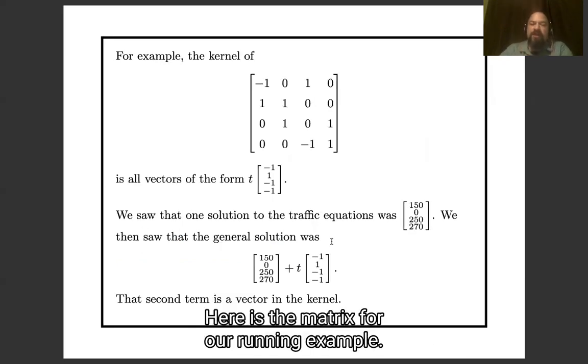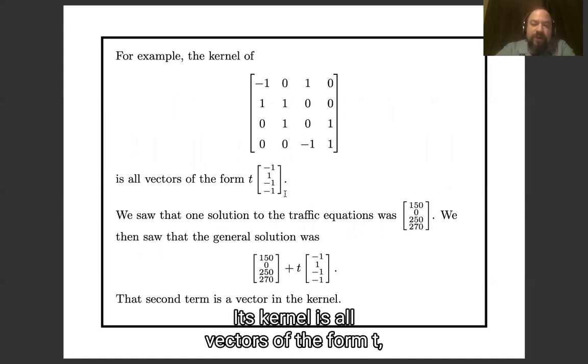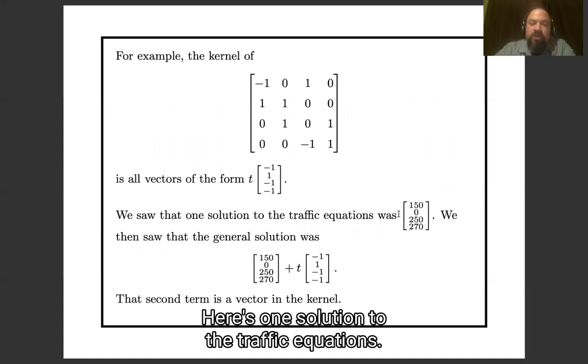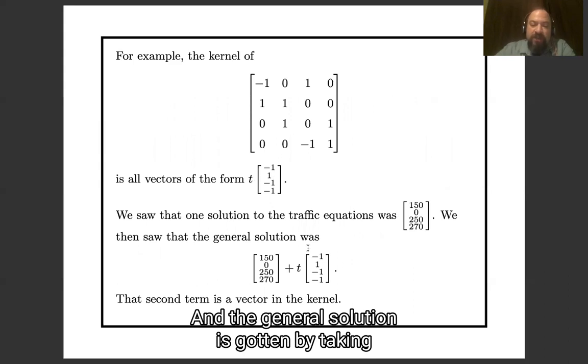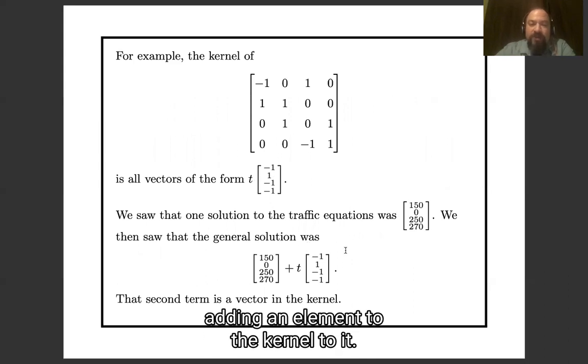So just to go through our example again, here's the matrix for our running example. Its kernel is all vectors of the form t, some scalar times minus one, one, minus one, minus one. Here's one solution to the traffic equations, and the general solution is gotten by taking the first solution and adding an element to the kernel to it.